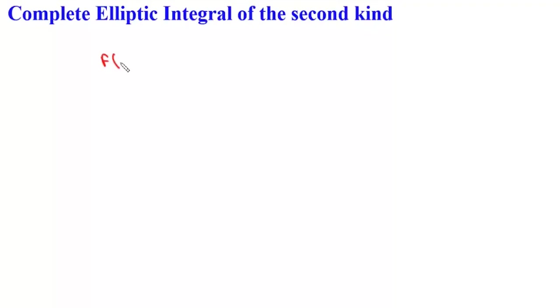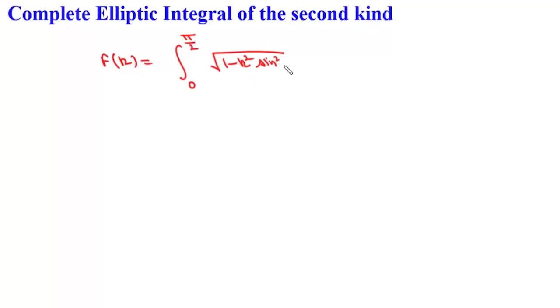Now we will solve the complete elliptic integral of the second kind. For the second kind, we can write E(k) as the integral from 0 to π/2 of the square root of 1 minus k² sin²θ dθ, where the value of k lies between 0 and 1.